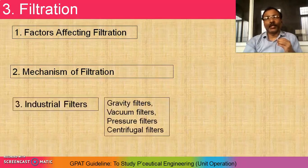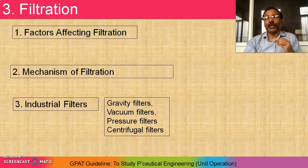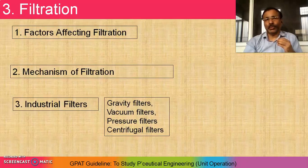Industrial filters: which filters are generally used in industry? That is gravity filters, vacuum filters, pressure filters, and centrifugal filters. While studying each filter, you have to check out its principle and then its application — exactly where it is used. In this way, we have to study filtration.